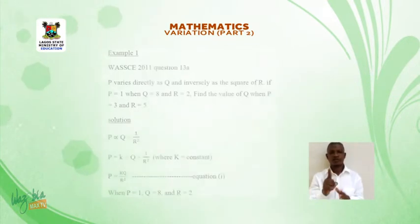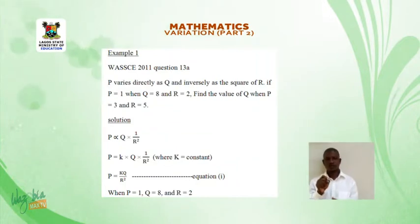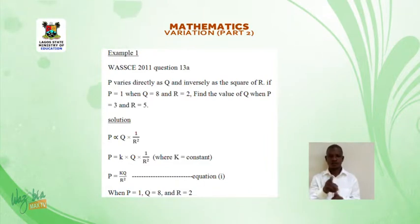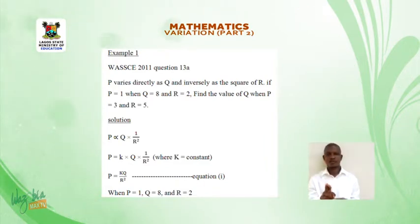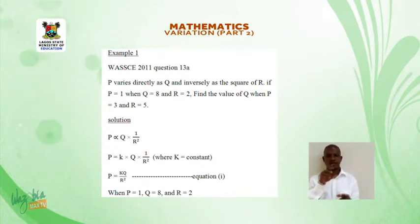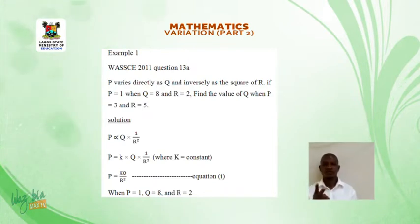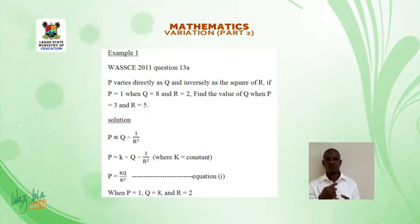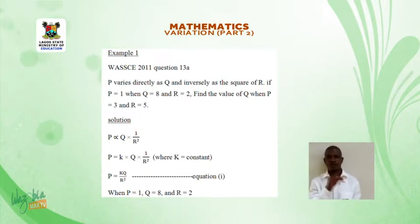Example 1. WAEC 2011, question 13a. P varies directly as Q and inversely as the square of R. If P is equal to 1 when Q is equal to 8 and R is equal to 2, find the value of Q when P is equal to 3 and R is equal to 5.